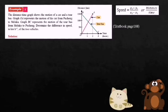In this example, the distance-time graph shows the motion of a car and a tour bus. Graph OA represents the motion of a car from Puchong to Melaka. Graph PC represents the motion of the tour bus from Melaka to Puchong. We need to determine the difference in speed in kilometers per hour of the two vehicles.